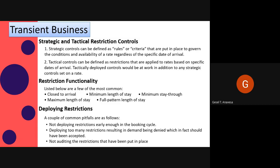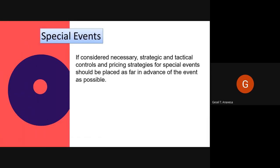Once you fail in auditing the restrictions that have been put in your system, the possibility arises that you may deny demand that should have been accepted. During special events, as the date grows closer, the effectiveness and applicability of the controls and rates should be checked and verified in comparison to the revised forecast and potentially the actions being taken by the competition.